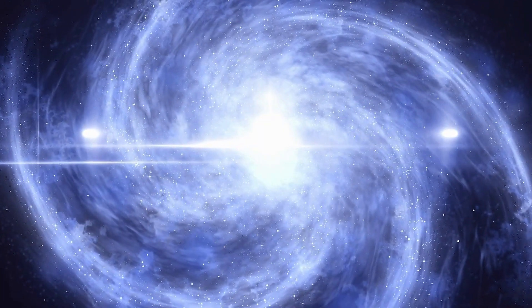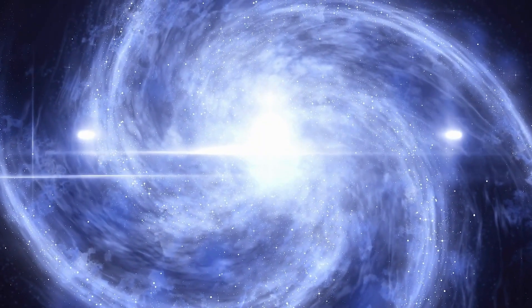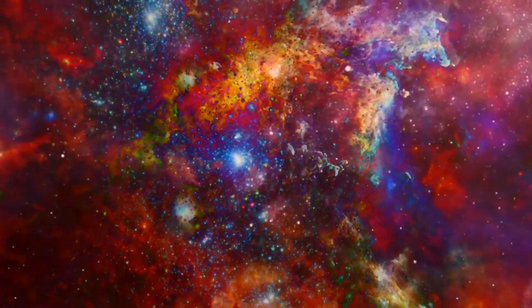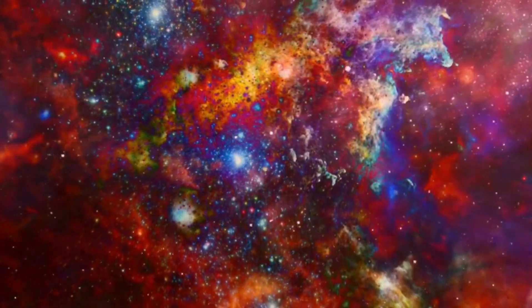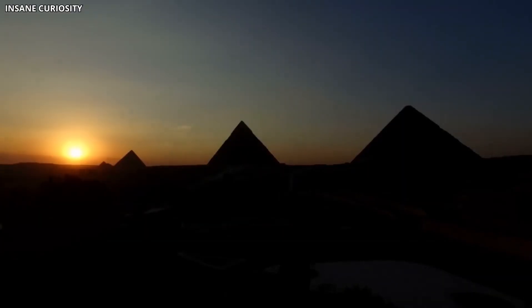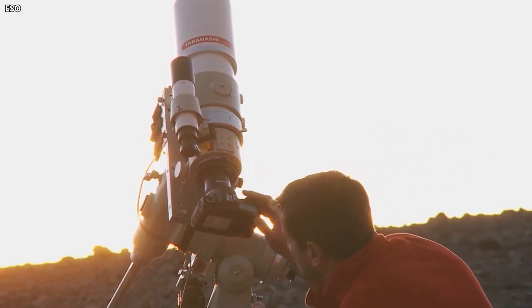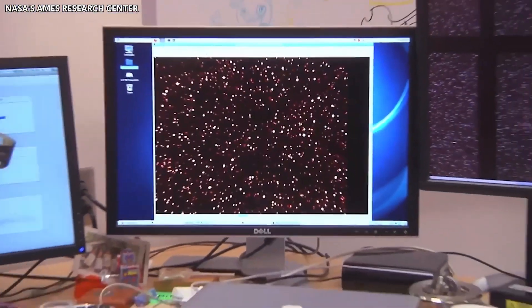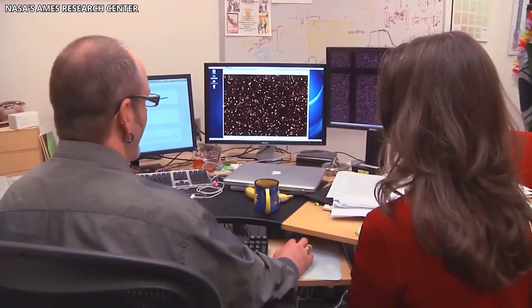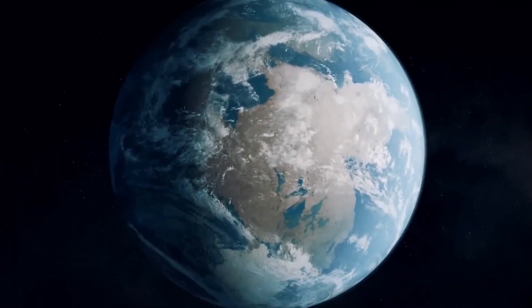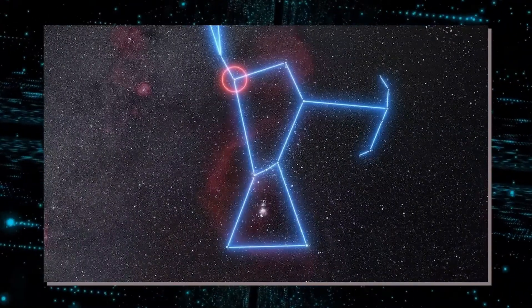Betelgeuse's amazing personality extends to its brightness, as it is the 10th brightest star in the night sky and the second brightest in its constellation, falling right behind Rigel. However, if we were to travel at near infrared wavelengths, no other star would take Betelgeuse's crown as the brightest star in the night sky. The sun's brightness dims significantly when placed beside the gigantic frame of Betelgeuse.